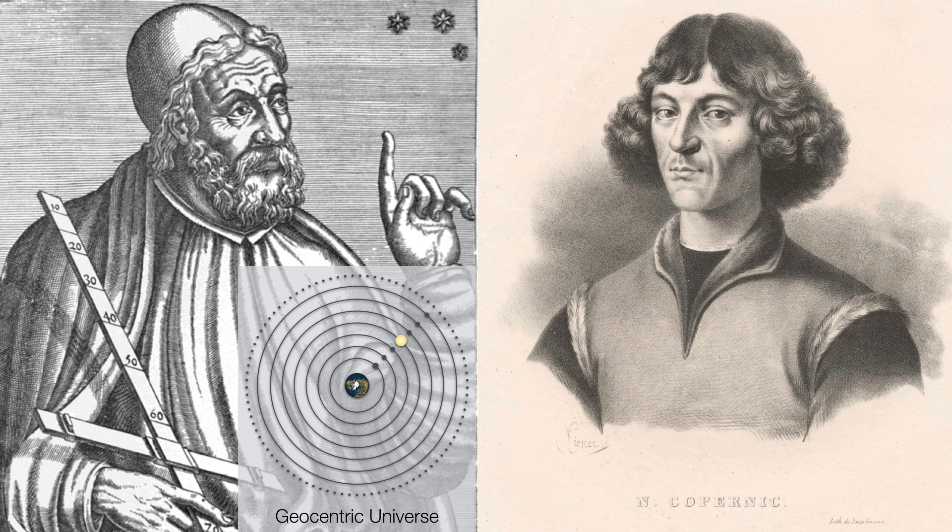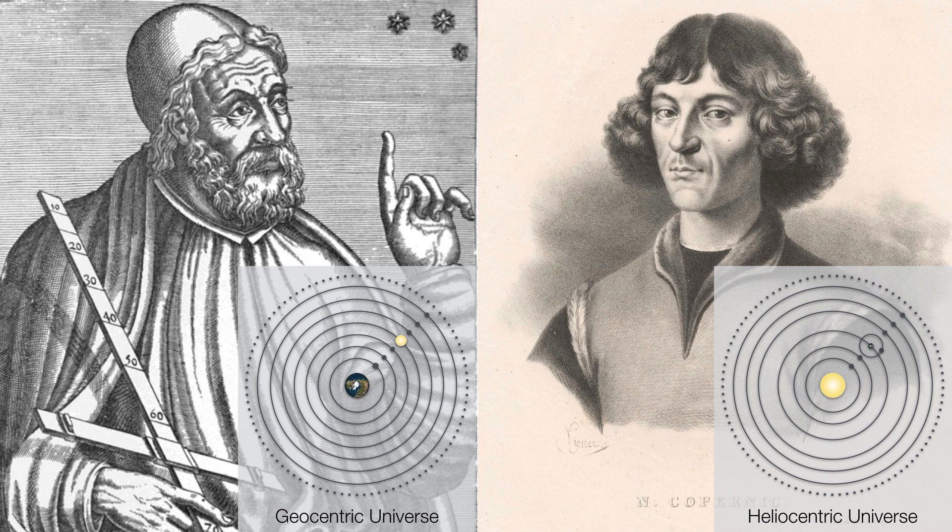Basically, Nicholas Copernicus offered an alternative to Ptolemy's geocentric universe, namely that the sun was at the center of the cosmos and that the planets, in turn, orbited the sun.